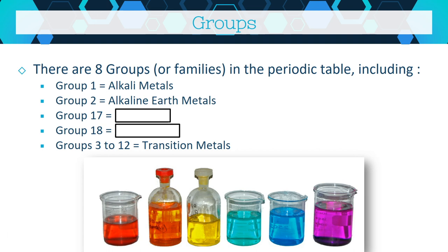On the far right is group 18, the noble gases — helium, neon, argon, krypton, xenon, radon, and a newly named element. One group in from the noble gases is group 17, the halogens — fluorine, chlorine, bromine, iodine, astatine, and another recently named element. These five groups have clear and distinct features: for example, noble gases are inert and don't react, while alkali metals react very violently with water.